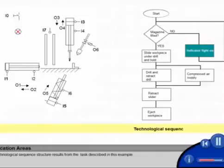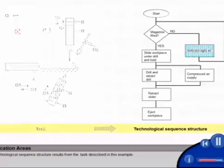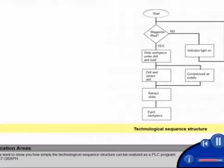The technological sequence structure results from the task described in this example. We now want to show you how simply the technological sequence structure can be realized as a PLC program using S7 Graph.